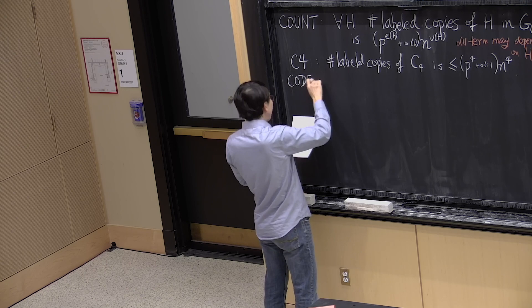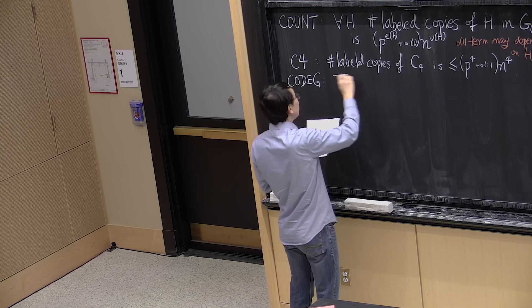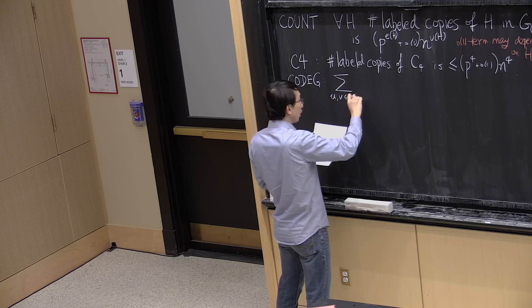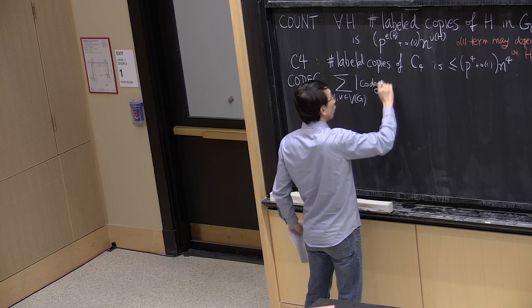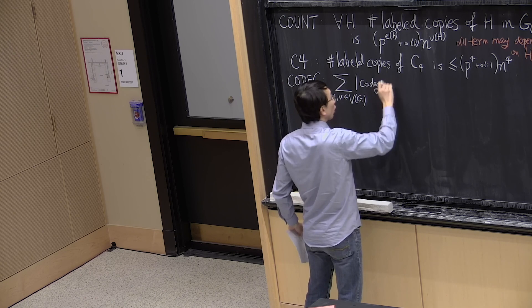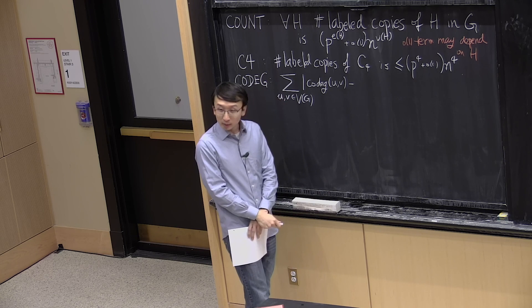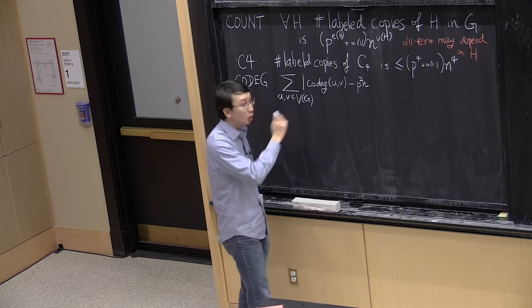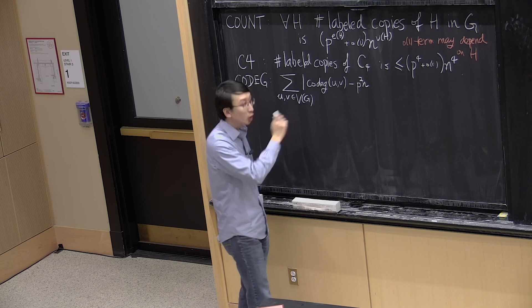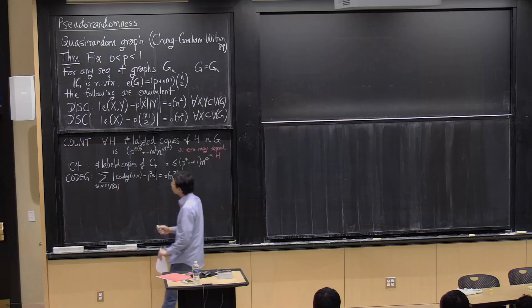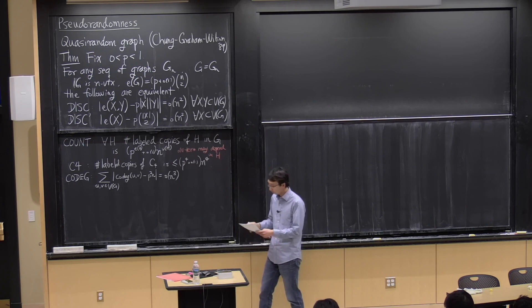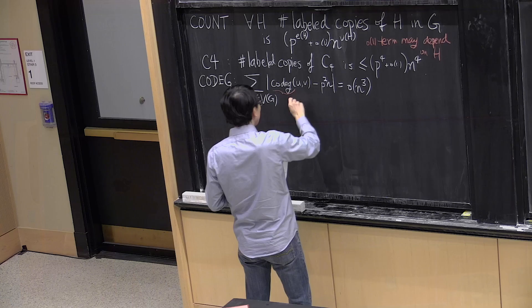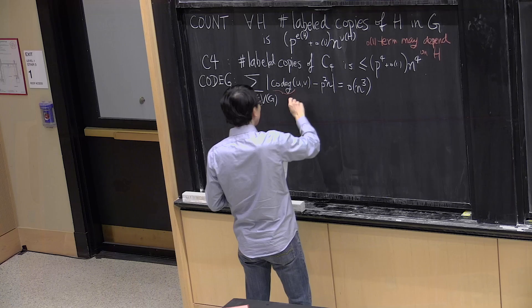The next condition is CODEGREE. The codegree condition says that if you look at a pair of vertices and their number of common neighbors — their codegree — then what should you expect this quantity to be? If this were a random graph with edge probability P, you'd expect the number of common neighbors to be around P² · N. The codegree condition states that the sum of deviations is small, so most pairs of vertices have roughly the correct number of common neighbors.